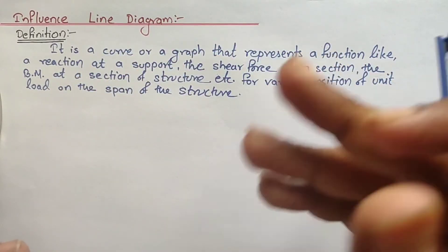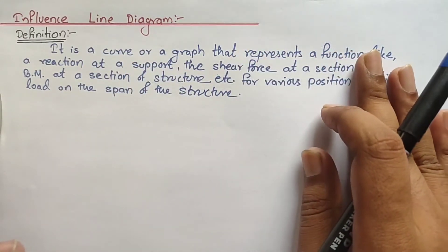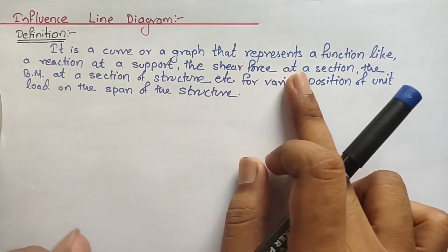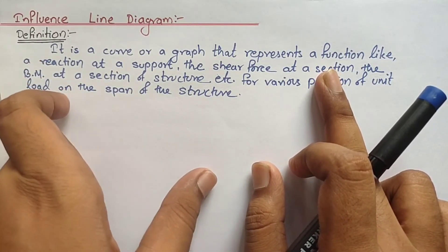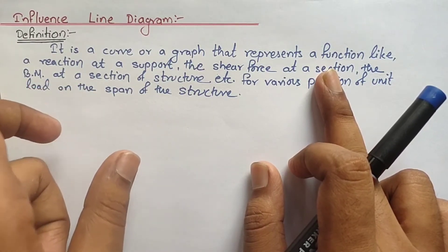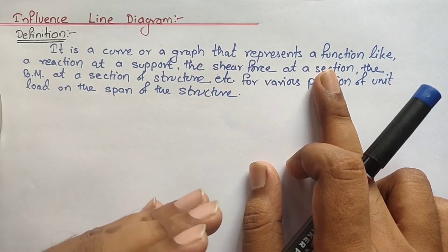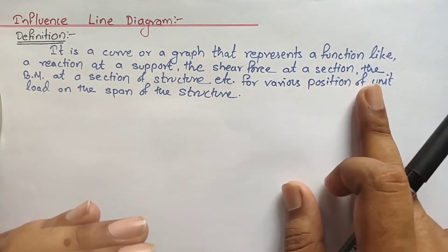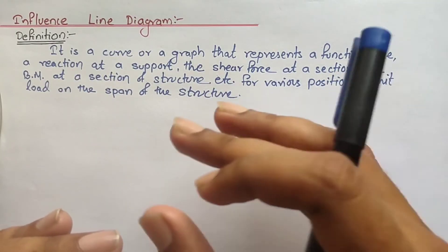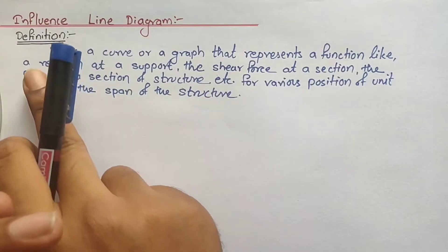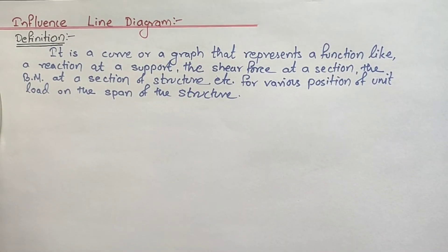In the Influence Line Diagram, we draw a graph or curve for three main quantities: first, the reaction at a support; second, the shear force at a given section — for example, at 5 m, 10 m, or 20 m from the left or right support; and third, the bending moment at a section. We calculate these quantities for various positions of the unit load on the structure.